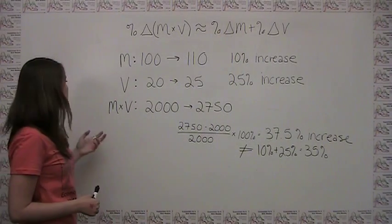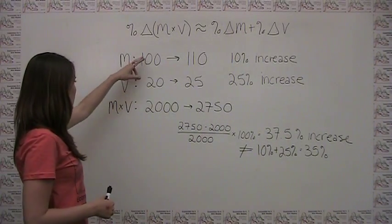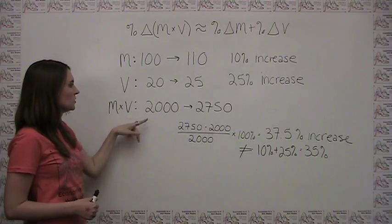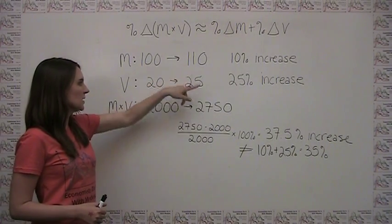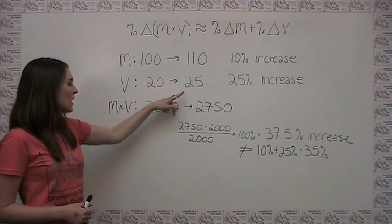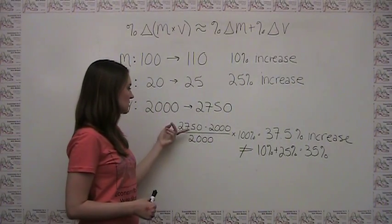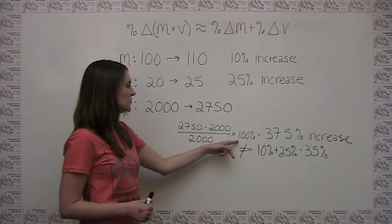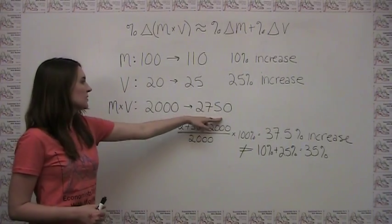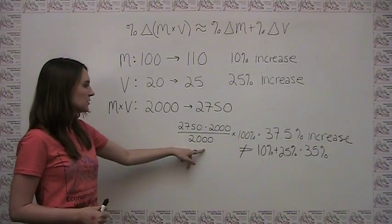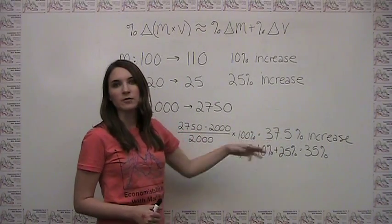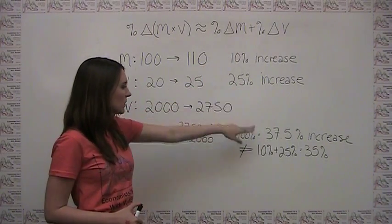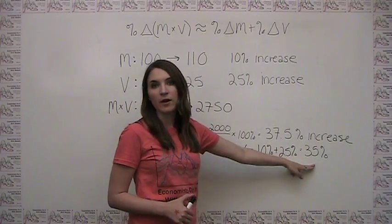If we multiply these two things together, M times V goes from 2000 — which is 100 times 20 — to 2750, which is 110 times 25. Using the percent change formula, which is final minus initial divided by initial times 100 percent, we see that 2750 minus 2000 divided by 2000 is actually a 37.5 percent increase, rather than 10 plus 25, which would be a 35 percent increase.